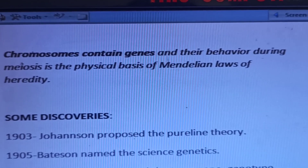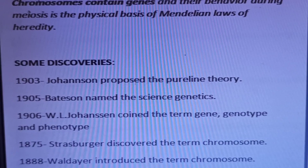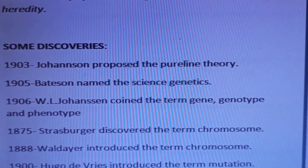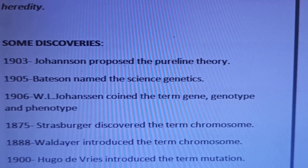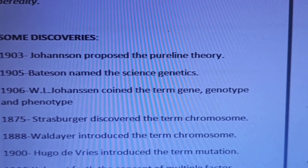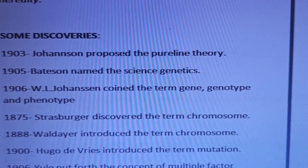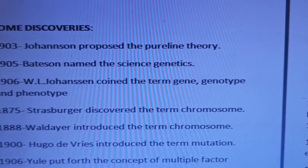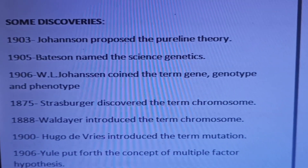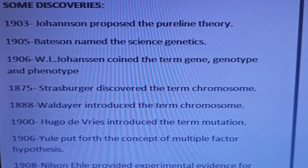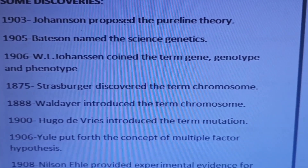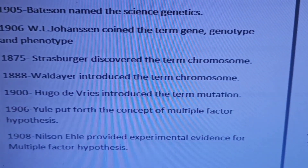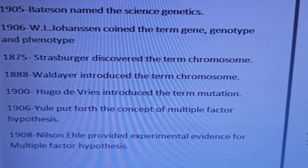Some important discoveries: In 1903, Johannsen proposed the pure line theory. In 1905, Bateson named the science genetics. In 1906, Johannsen coined the terms gene, genotype, and phenotype — don't confuse who coined 'genetics' versus who coined 'gene': gene was coined by Johannsen. Strasburger discovered and Waldeyer introduced the term chromosome. De Vries introduced the term mutation and is the father of mutation. Nilsson-Ehle put forth the multiple factor hypothesis and Nelson provided experimental evidence for it.